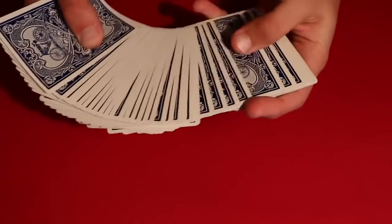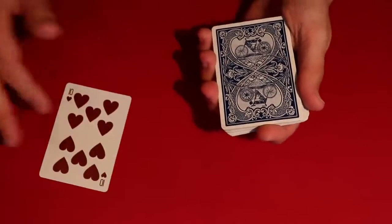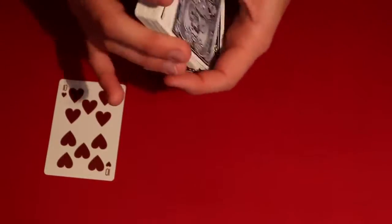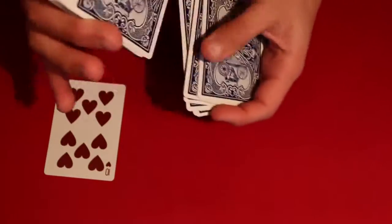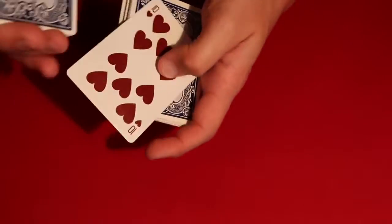So you go ahead and you have the spectator pick any card that they want to, and let's say in this case it's a ten of hearts, right? So you go ahead and what you do is tell your spectator to tell you when to stop, and all you're doing is a regular overhand shuffle. And the moment they tell you to stop, I'll leave the card right here.